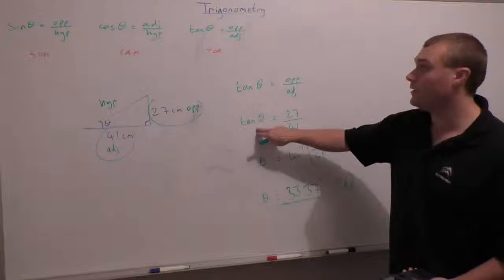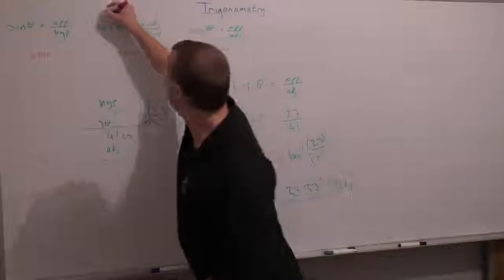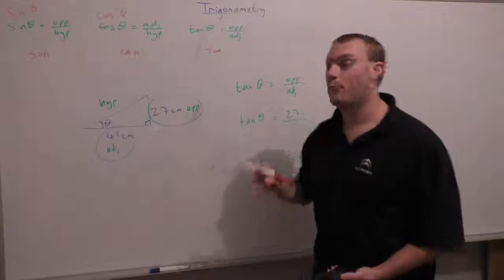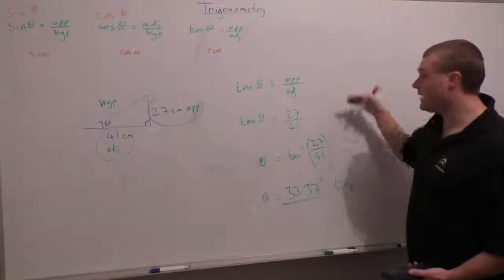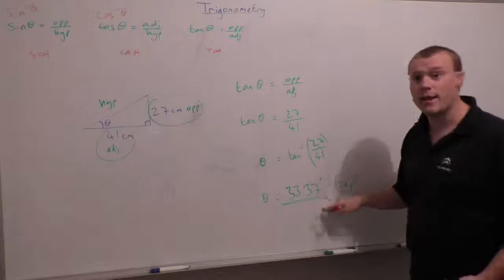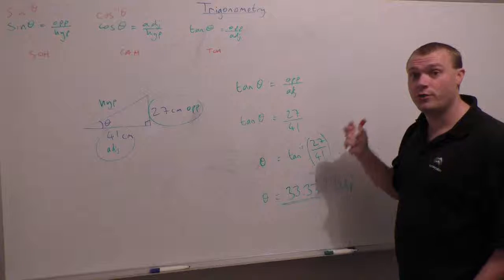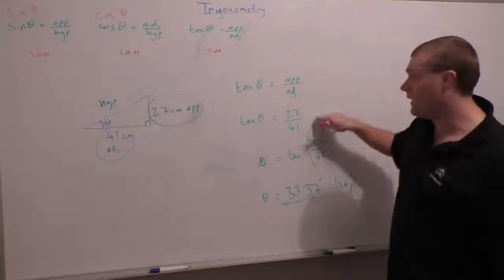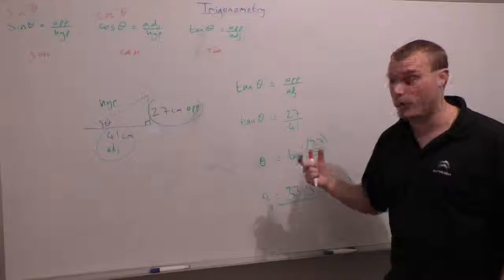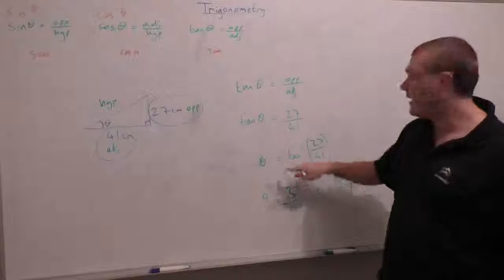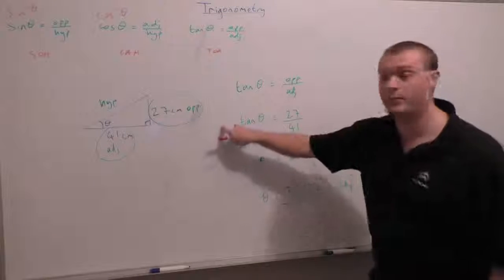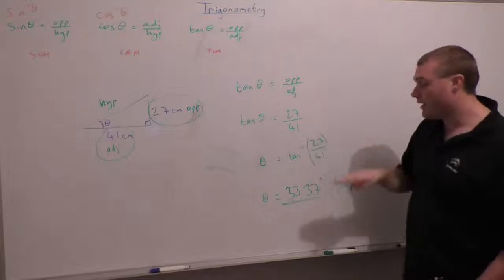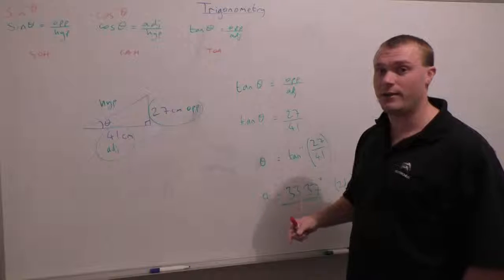It doesn't just work for tan — cos has an inverse, cos to the minus 1, and there's a sin to the minus 1 as well. They're all on your calculator. So these are the steps, and it's not a lot of working — you only need to pick up your calculator right at the end. Start with your formula, put the values in, then think about what rearranging you need to do. If the unknown is the angle, use the inverse function. If the unknown is on top of the fraction, move the bottom number up. If it's on the bottom, move that number up and move the other one down. Trigonometry basics become really quite easy with this simple method.